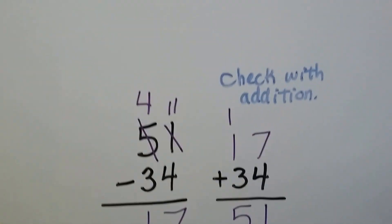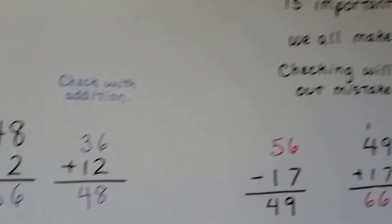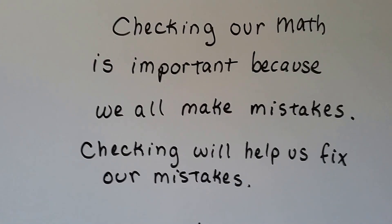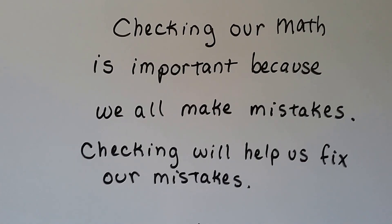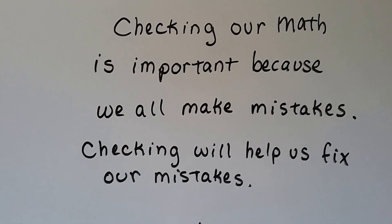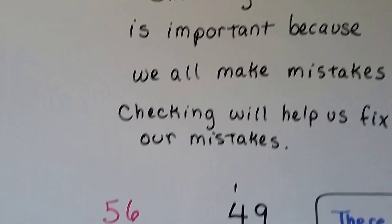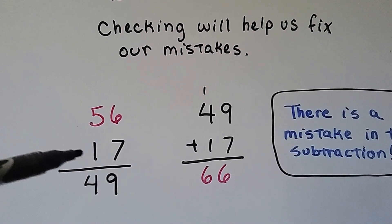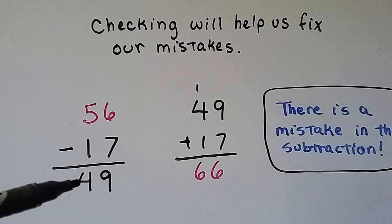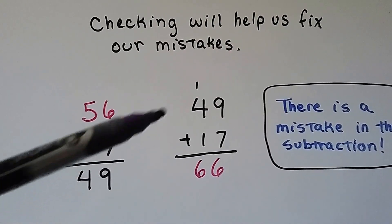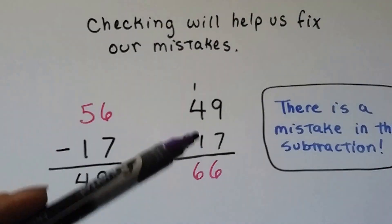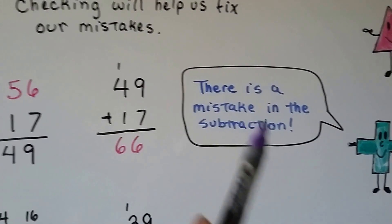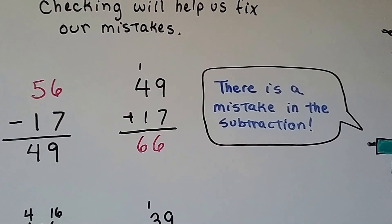So checking our math is important because we all make mistakes, and checking will help us fix our mistakes — especially if we're taking a test. Now look at this one. We did 56 minus 17 and got a 49. When we took the 49 as an addend and added it to the subtrahend, we got a 66. So the addition check is telling us there's a mistake in the subtraction.